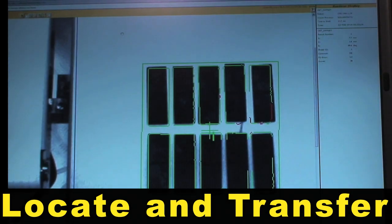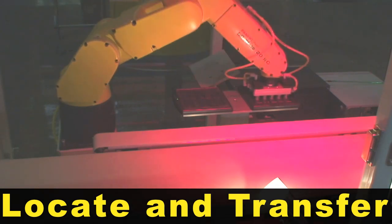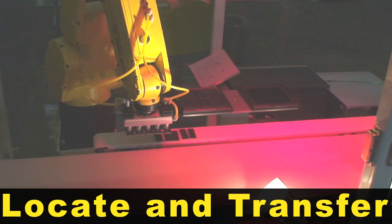An LR Mate 200IC robot locates the array using IR vision and transfers it to the top of a solar panel for assembly. The robot then picks a glass panel from a magazine and places it on top of the solar cell.